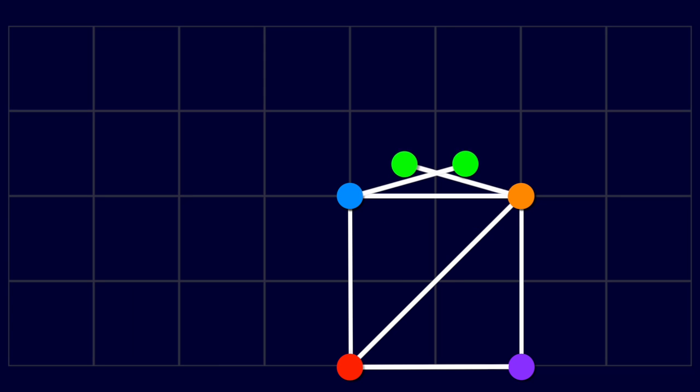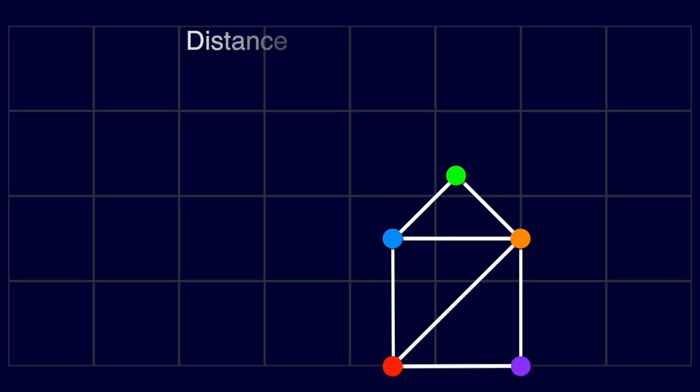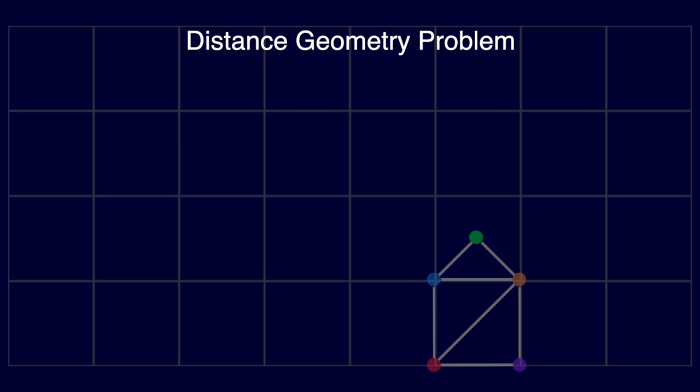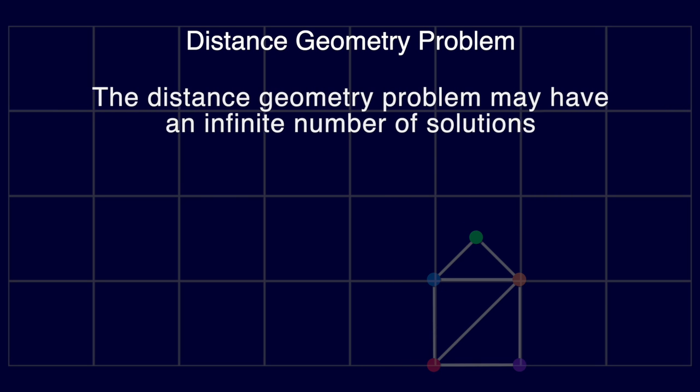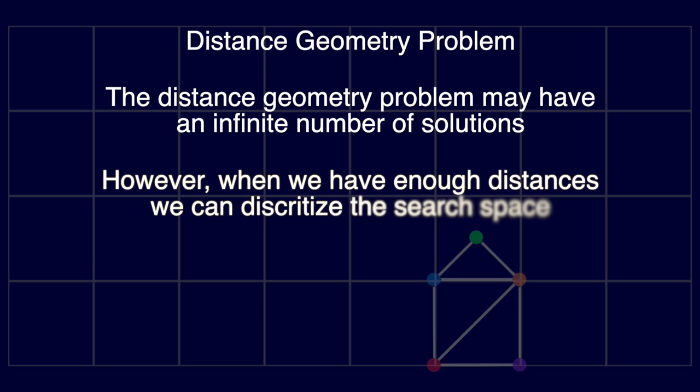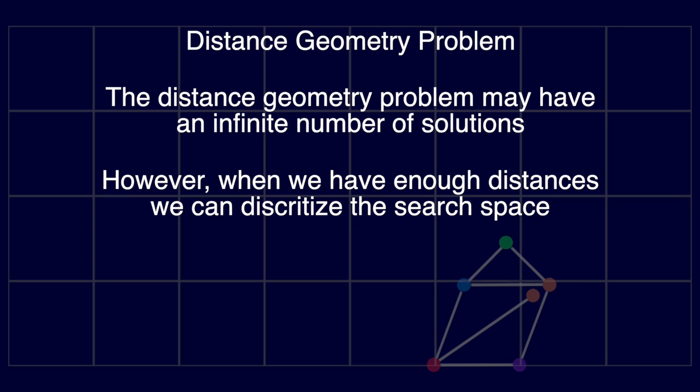When we have an instance of the distance geometry problem with a finite number of solutions, we say that the problem is discrete. This teaches us something new. While the distance geometry problem may have an infinite number of solutions, when we have an instance with enough distances, we can discretize the search space.